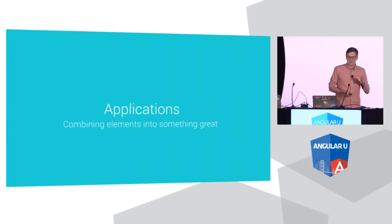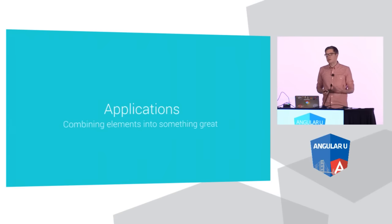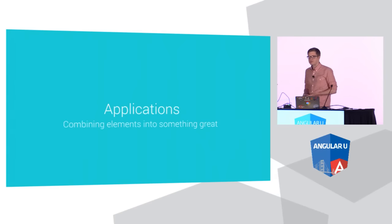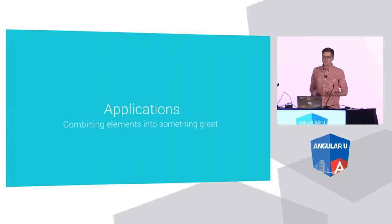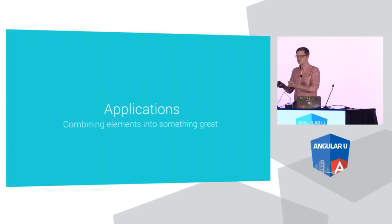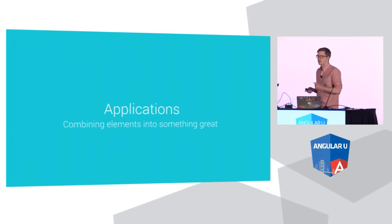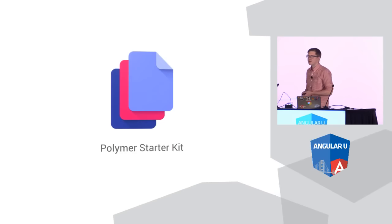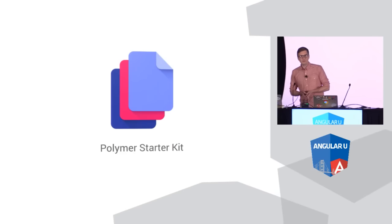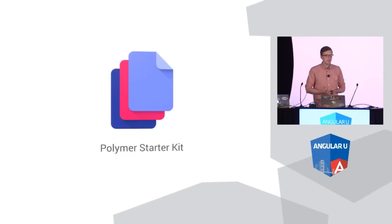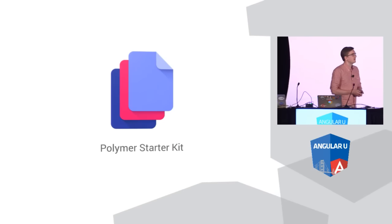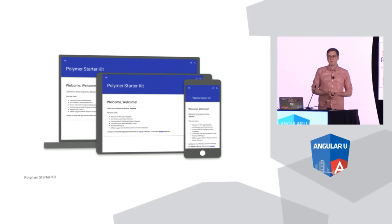Our hope with all of this is that when you have some problem you're trying to solve or some feature you want to add to your application, you can say there's an element for that. This is actually one of the areas where I still get a lot of questions from developers — they get how to build individual elements, but they're just not sure how to knit things together into an entire app. To help with this, we've got another project called Polymer Starter Kit.